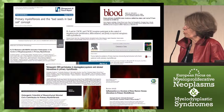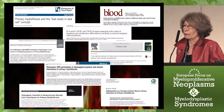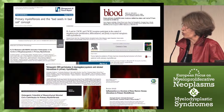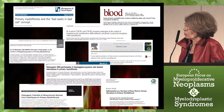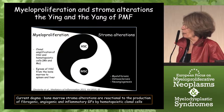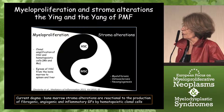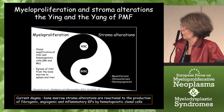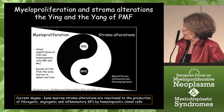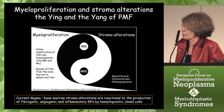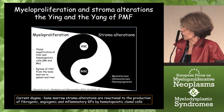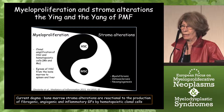In our team, we have been involved for a long time in studying inflammatory cytokines and the pathology of stroma in myeloproliferative disorders, especially in primary myelofibrosis, since it is a very peculiar myeloproliferative neoplasm associating myeloproliferation with stromal alteration. The myeloproliferation is characterized by a clonal amplification of hematopoietic progenitor cells and especially megakaryocytes and monocytes, and by egress of those hematopoietic progenitors from the bone marrow to the spleen and liver through the blood.